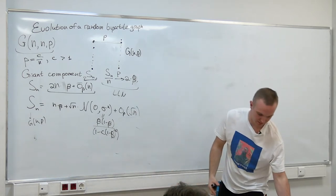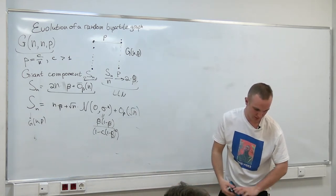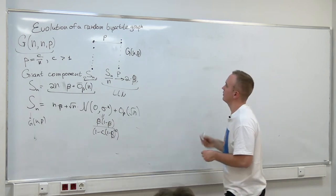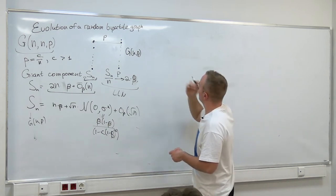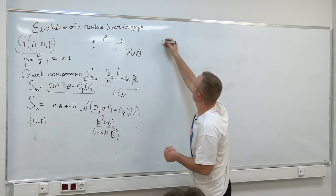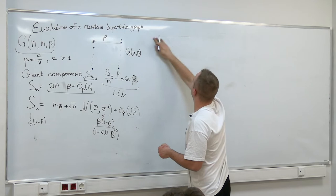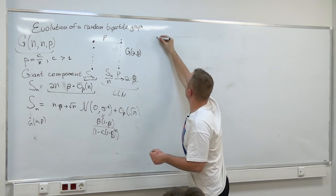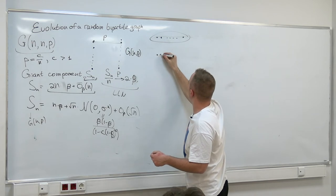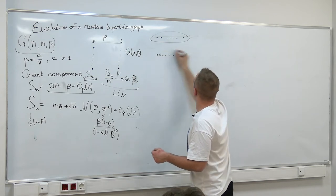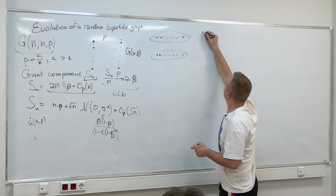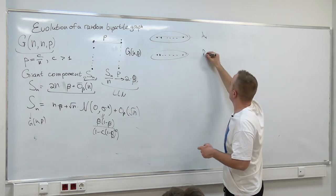Let me show how it can be done for the bipartite random graph. We are going to traverse our graph. We have two components of size N. We have sets A_N here and B_N here — those are the active vertices. We also have U_t, W_t (unseen or undiscovered) and E_t, F_t (explored). All these six things are subsets of vertices.